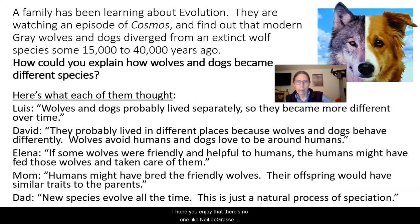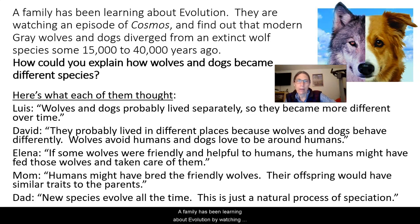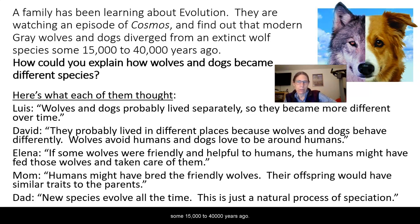I hope you enjoyed that. There's no one like Neil deGrasse Tyson to tell a great science story. So now we're going to proceed with figuring out who has the best explanation. Here's the scenario: a family has been learning about evolution. They are watching an episode of Cosmos and find out that modern gray wolves and dogs diverged from an extinct wolf species some 15,000 to 40,000 years ago.